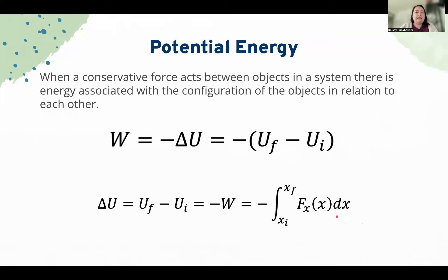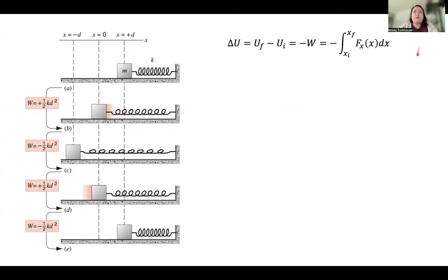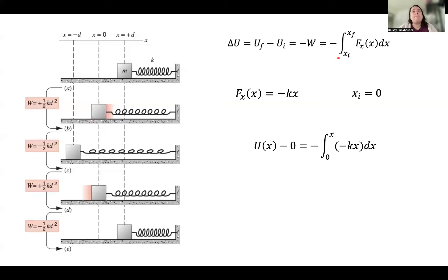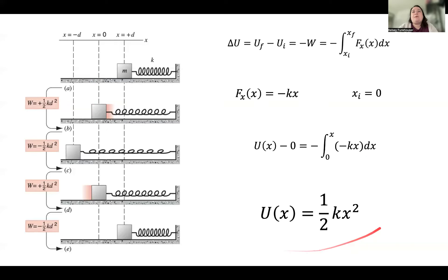We can use the relationship that work is the integral of force with respect to displacement to derive potential energy equations. For the spring force, F of x is negative kx. Taking the integral of negative kx from zero to x gives us the spring potential energy: one-half kx squared, where k is the spring constant.